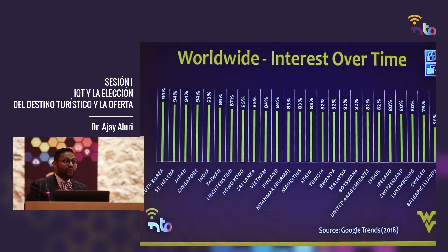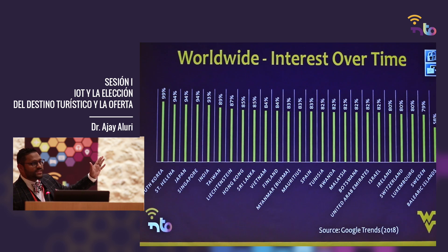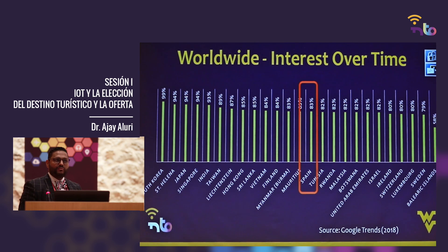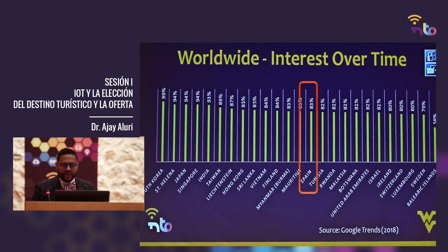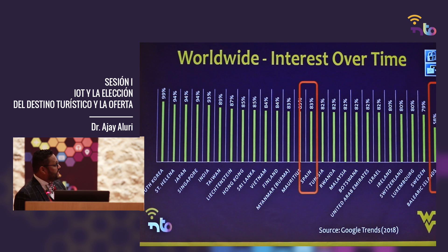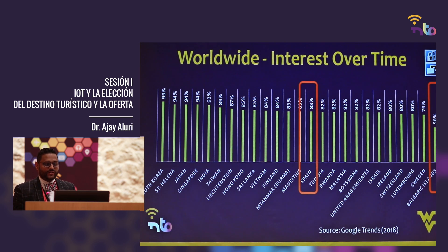Most people are now calling it just 'IoT.' If you look at worldwide interest over time according to Google Trends, you can see the countries with the highest IoT search term interest. Google has about 75% of the search rate. Spain is in the top 15 at 83% interest over time, while the islands here are at 58%. South Korea, Japan, Singapore, India, Taiwan, Hong Kong — these are all the countries on top for IoT Google Trends interest over time.